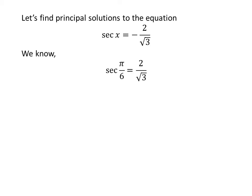We know the value of secant of pi upon 6 is 2 upon square root of 3. We also know the famous trigonometry identity: secant of pi minus a is equal to minus secant of a. The proof of this identity is given in the video appearing in the upper right corner, and the link is also given in the description section.